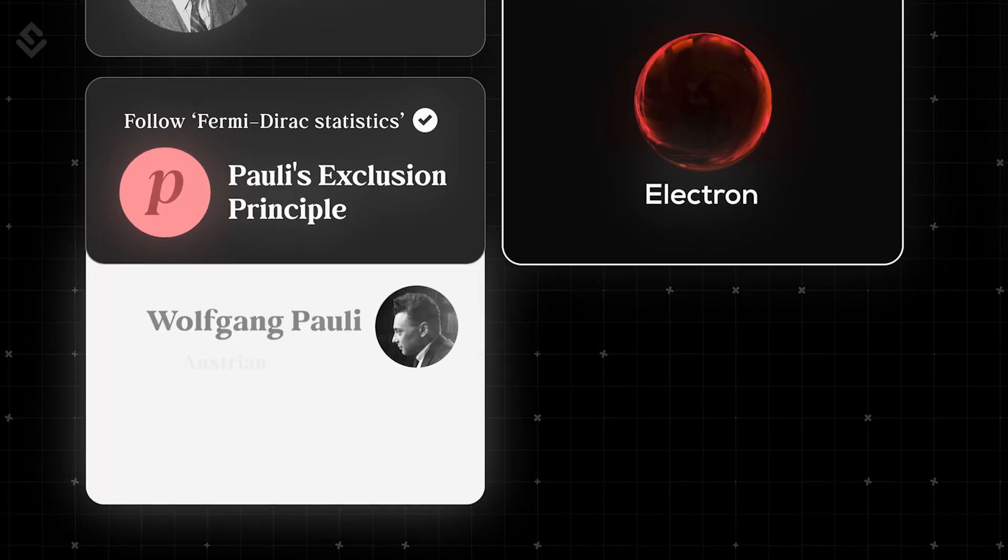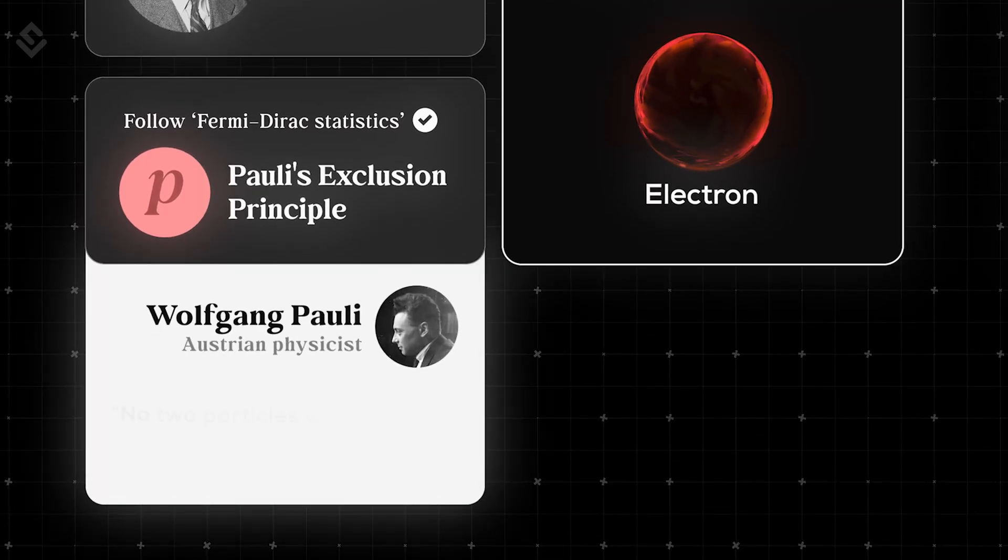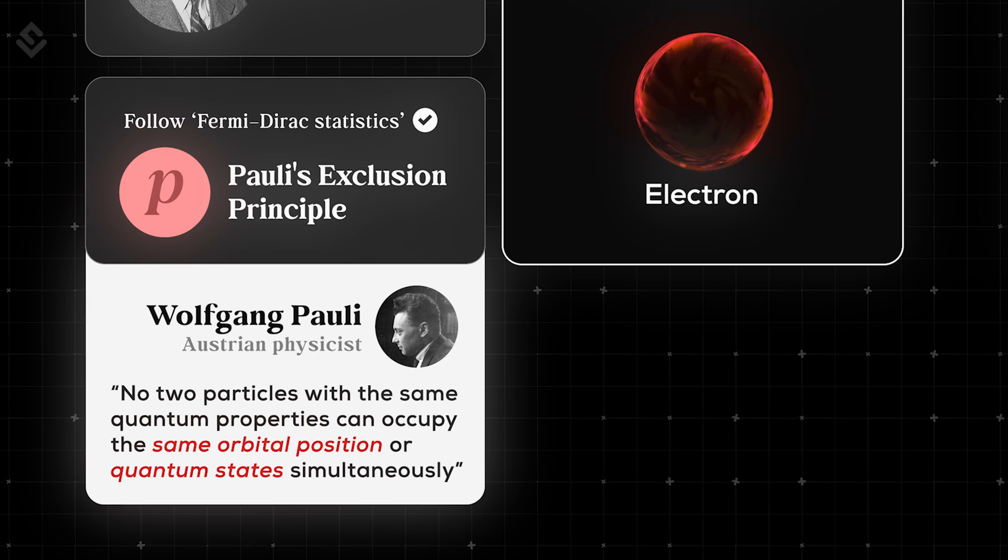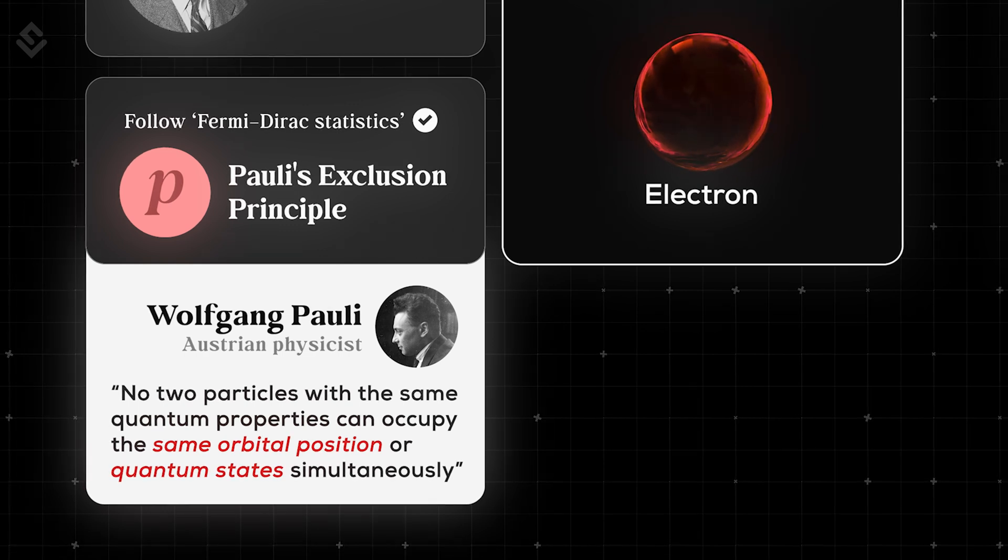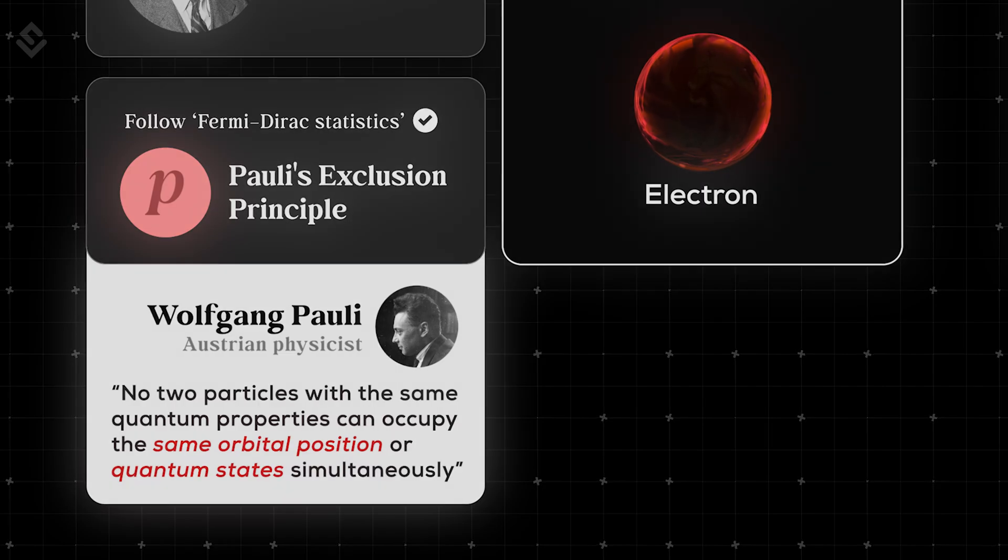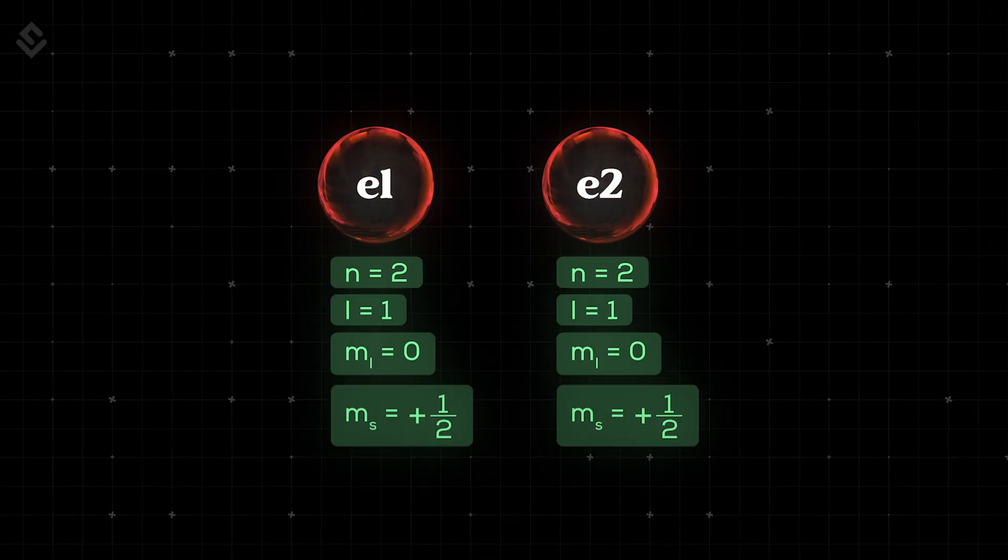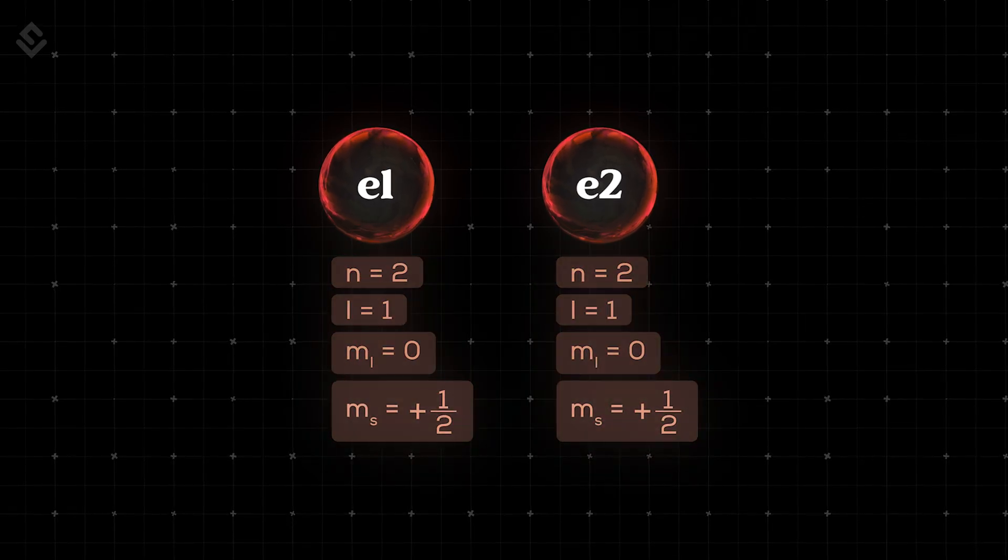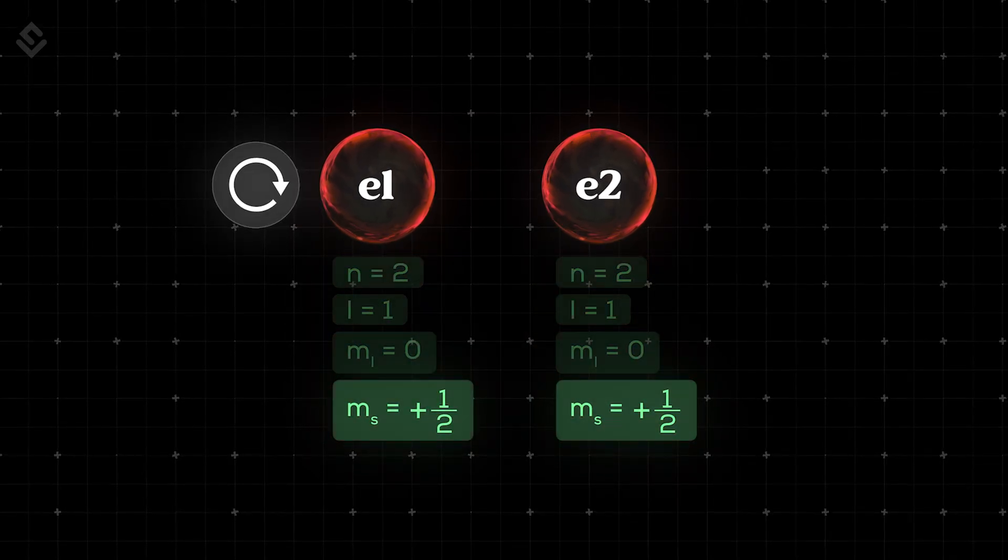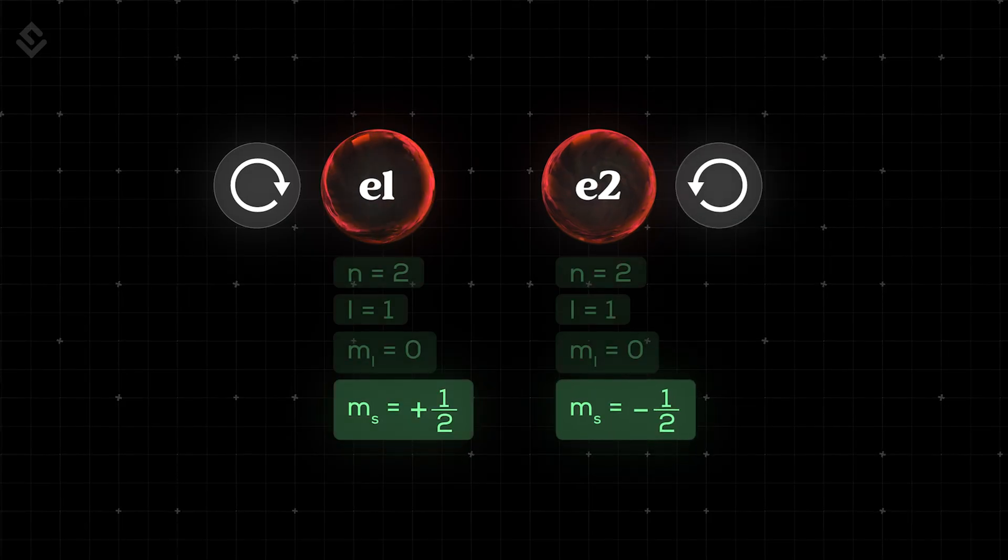This principle, formulated by Wolfgang Pauli, states that no two particles with the same quantum properties can occupy the same orbital position or quantum states simultaneously. This is exactly why no two electrons in an atom have the same quantum numbers. If one electron has its spin clockwise, then the other electron must have its spin anticlockwise.